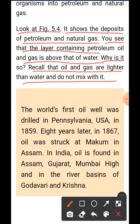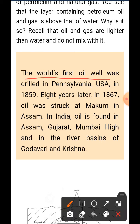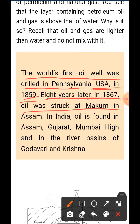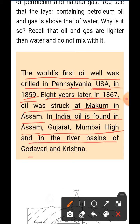The world's first oil well was drilled in Pennsylvania, USA, in 1859. Eight years later, in 1867, oil was struck at Makum in Assam, India. In India, oil is also found in Assam, Gujarat, Mumbai High, and in the river basins of Godavari and Krishna.